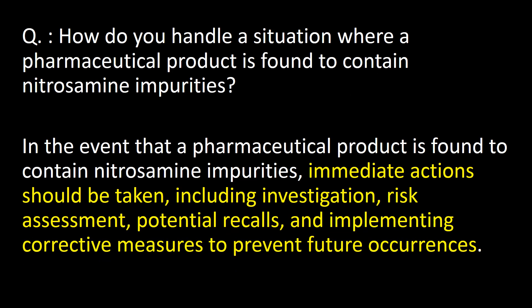How do you handle a situation where a pharmaceutical product is found to contain nitrosamine impurities? In the event that a pharmaceutical product is found to contain nitrosamine impurities, immediate actions should be taken including investigation, risk assessment, potential recalls, and implementing corrective measures to prevent future occurrences.